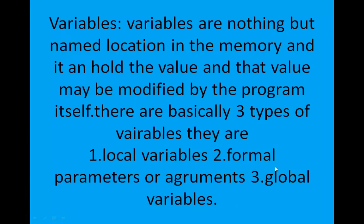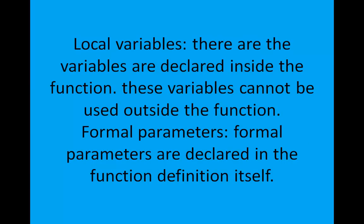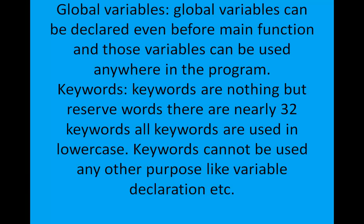Variables are used to store and modify values in a C program. There are three types of variables: local variables, which are declared inside a function and used only within it; formal parameters, which are declared in the function definition itself; and global variables, which are declared before the main function and can be used anywhere in the program.